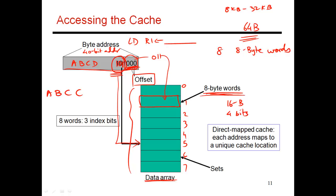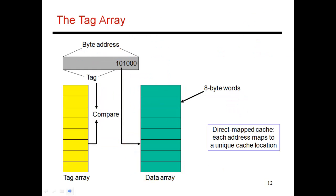In this case, maybe I'm looking for address ABCD 101000. But there could be other addresses too, let's say ABCC 101000, which also has the same 3 bits over here and maps to the same entry. So to distinguish between different elements that might be mapped to the same location in my cache, I need something called a tag array.